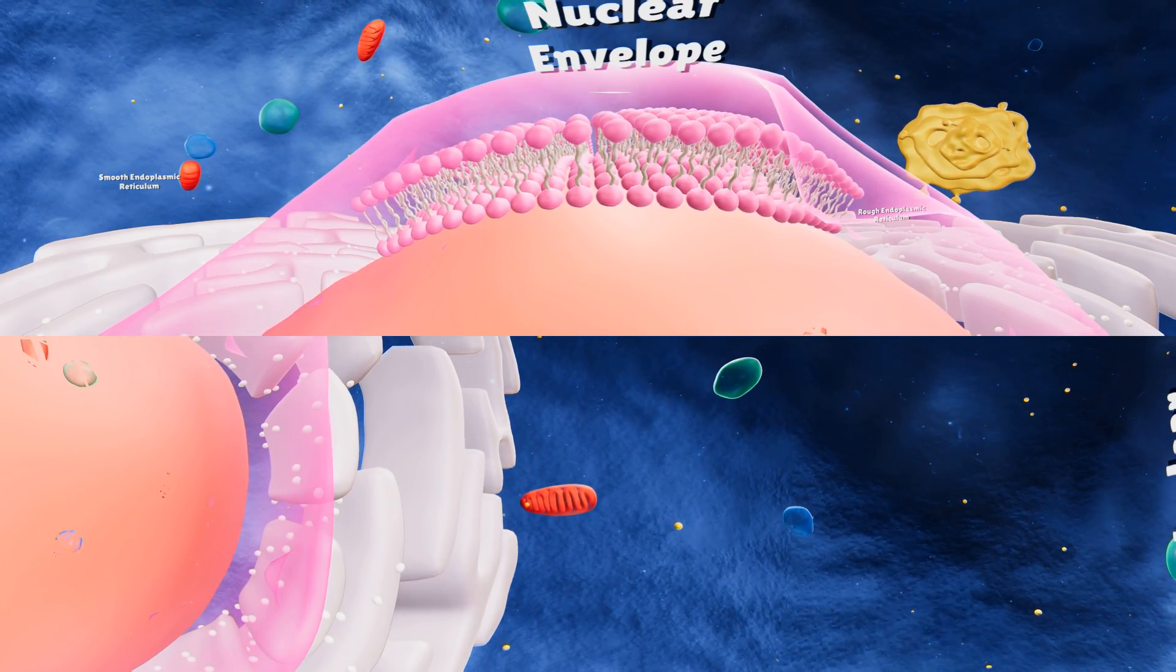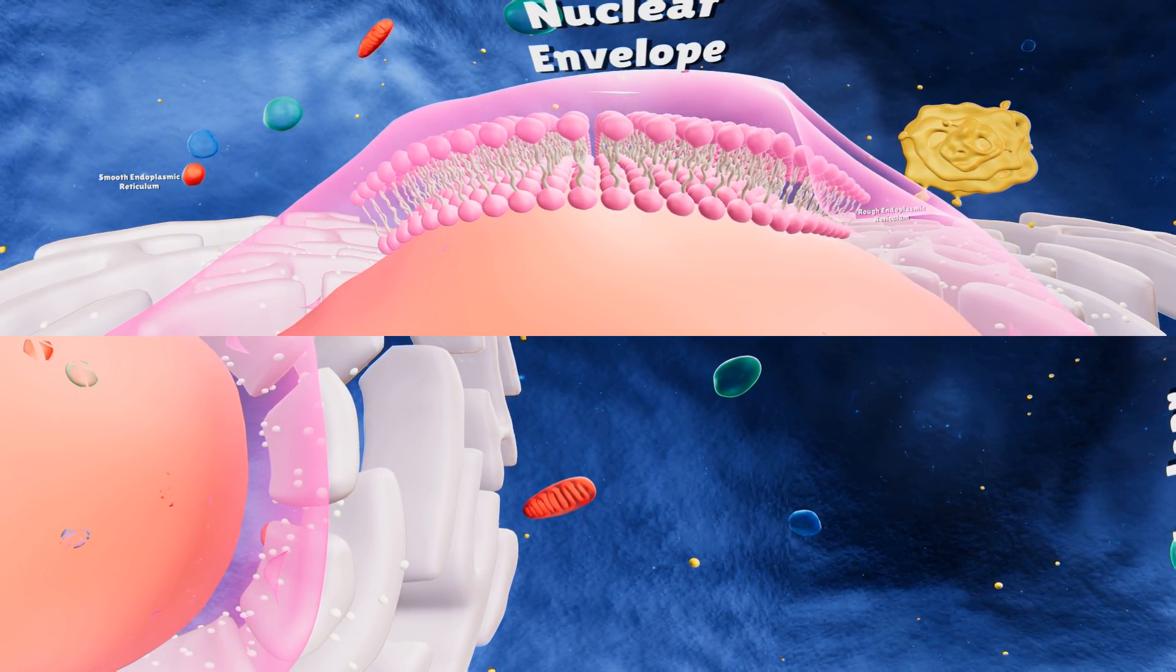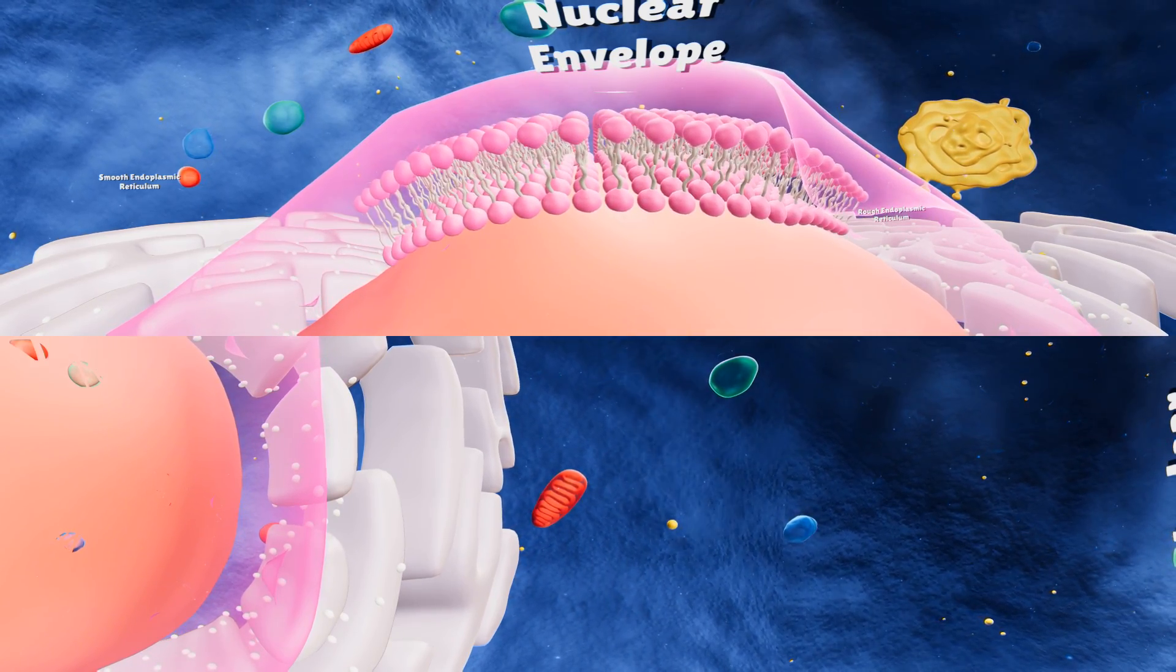The tails are pointing inwards since they hate water, thus forming a phospholipid bilayer.